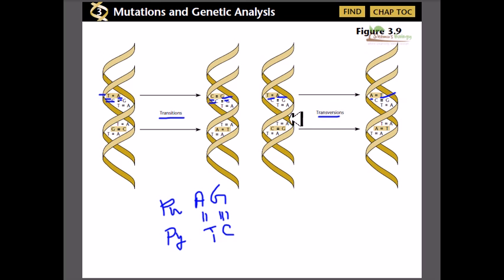To summarize the differences: in transitions, purine replaces purine and pyrimidine replaces pyrimidine. In transversions, purine is replaced by pyrimidine and pyrimidine is replaced by purine.